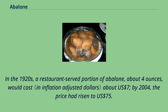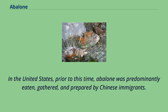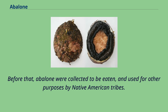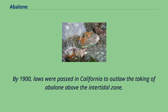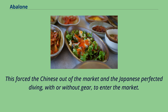In the 1920s, a restaurant-served portion of abalone, about 4 ounces, would cost about 7 US dollars. By 2004, the price had risen to 75 US dollars. In the United States, prior to this time, abalone was predominantly eaten, gathered, and prepared by Chinese immigrants. Before that, abalone were collected to be eaten and used for other purposes by Native American tribes. By 1900, laws were passed in California to outlaw the taking of abalone above the intertidal zone, which forced the Chinese out of the market and the Japanese perfected diving, with or without gear, to enter the market.